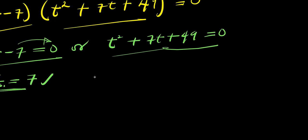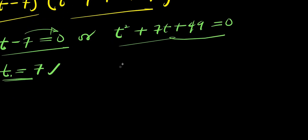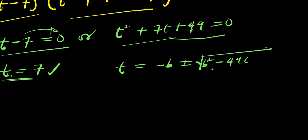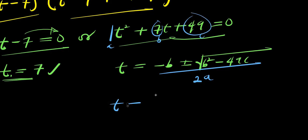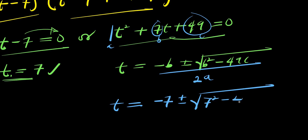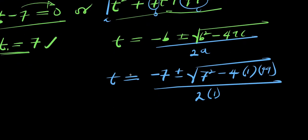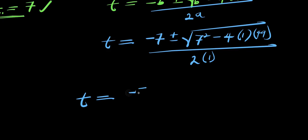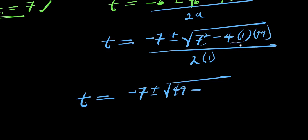Now let's solve the quadratic t squared plus 7t plus 49 equals 0 using the quadratic formula: t equals negative b plus or minus square root of b squared minus 4ac, divided by 2a. Here a equals 1 (coefficient of t squared), b equals 7, and c equals 49. So we have t equals negative 7 plus or minus square root of 7 squared minus 4 times 1 times 49, divided by 2 times 1. That gives t equals negative 7 plus or minus square root of 49 minus 196, divided by 2.